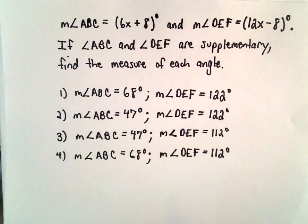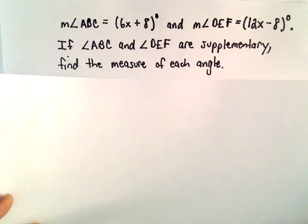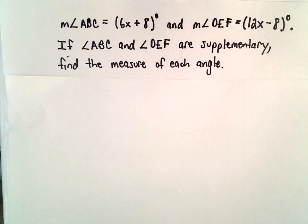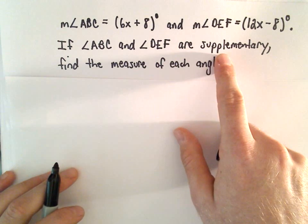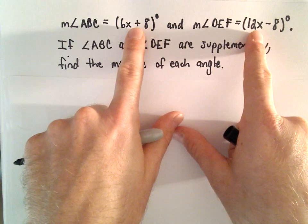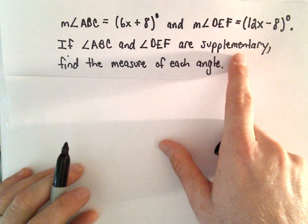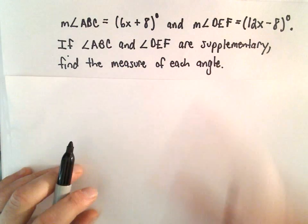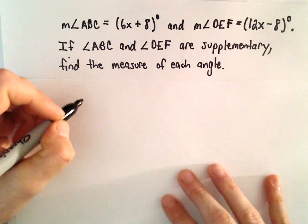So using that information, we want to find the measure of each angle. Again, it's kind of just knowing some definitions - if they're supplementary, you add them together and get 180 degrees. Recall, if they're complementary, if you add them together we get 90 degrees, but we don't need that in this case.